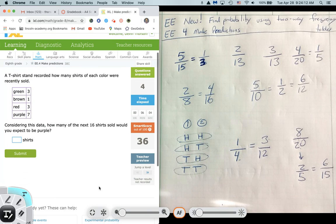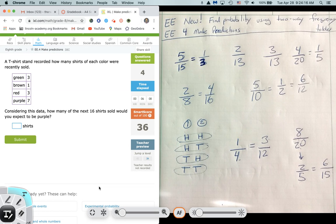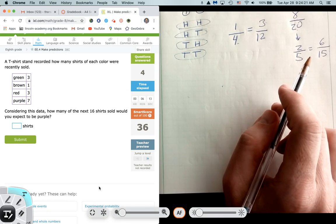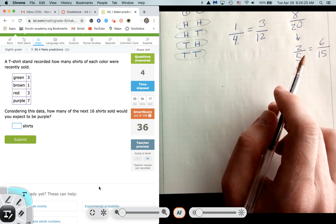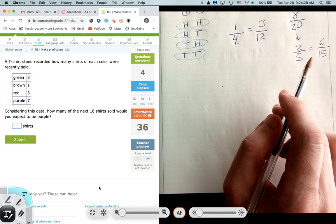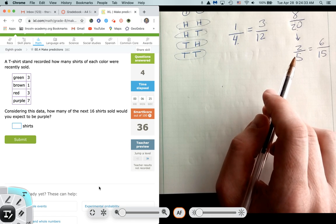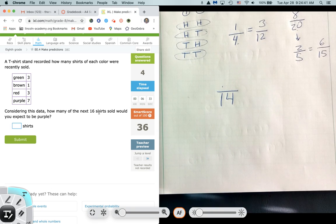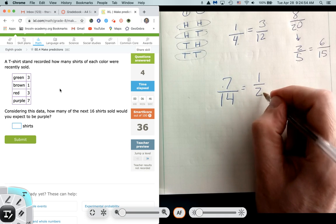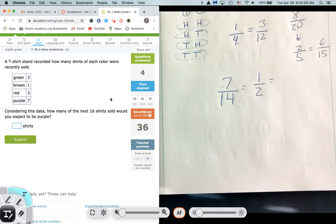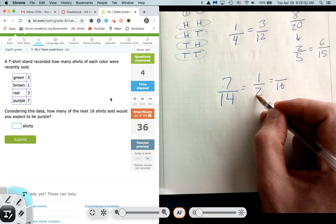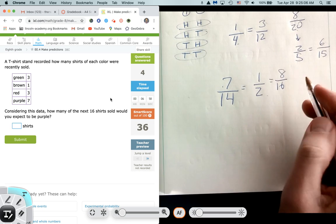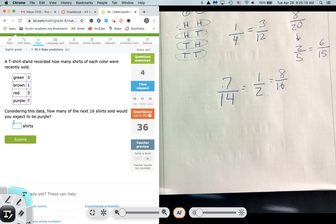So it's just getting these equal ratios. Let's do one more. And then if you have questions, please email me. But let's do this one here. It says, a t-shirt stand recorded how many shirts of each color were recently sold. So there was a total of three green, a total of one brown, a total of three red, and a total of seven purple for a grand total of 14. So there's a grand total of 14. And we want to consider with this data how many of the next 16 shirts sold would you expect to be purple? Well, out of the 14 that we did sell, how many were purple? Oh, seven, which that fraction reduces, meaning 1 out of 2 will be purple. So if we sell a total of 16, we can predict out of the 16, since I had a 2 times 8 is 16, 1 times 8 is 8. Or in other words, half of those 16 will most likely be purple. So we type in eight.